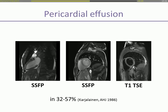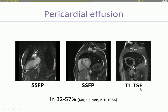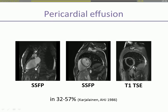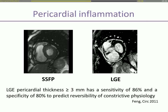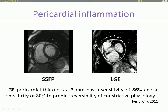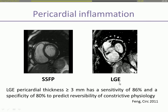Typically, simple uncomplicated effusions have low signal intensity on T1 turbo spin echo imaging and high signal intensity on SSFP imaging. CMR also has the ability to visualize pericardial inflammation using late gadolinium enhancement.